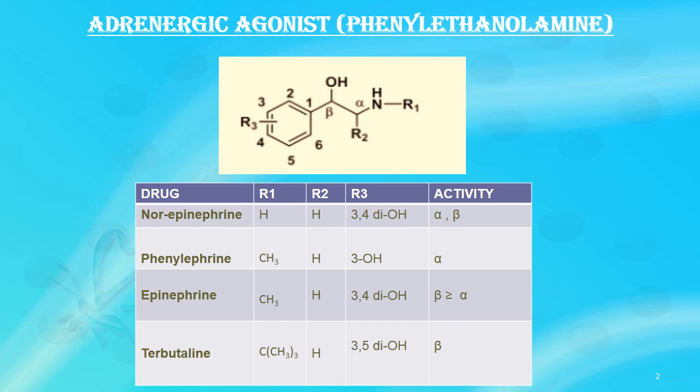In the general structure, I have given three modification points: R1, R2, and R3. We can modify these points to obtain various drugs of this category. For example, I have drawn structures of norepinephrine, phenylephrine, epinephrine, and terbutaline — these are the various drugs from this same category.